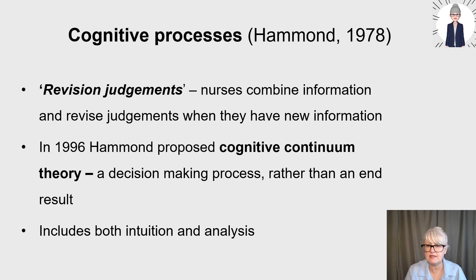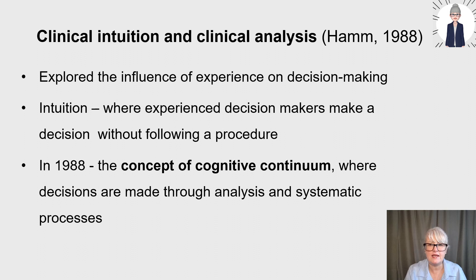Moving on from classical models, we look at cognitive processes. Hammond (1978) recognized that nursing judgments are commonly made under uncertain situations, describing how nurses combine information and continually revise judgments using cognitive processes when they receive new information — calling these 'revision judgments.' In 1996, Hammond proposed cognitive continuum theory, where the decision making process is a whole process rather than just an end result, including both intuitive and analytical processes.